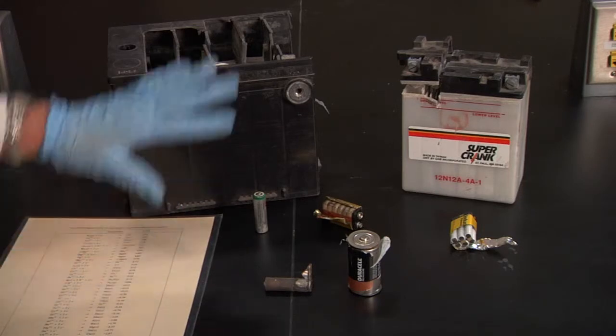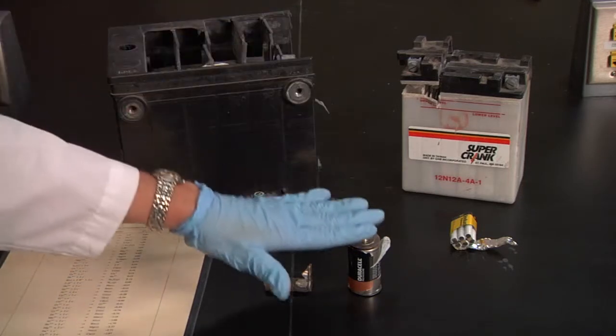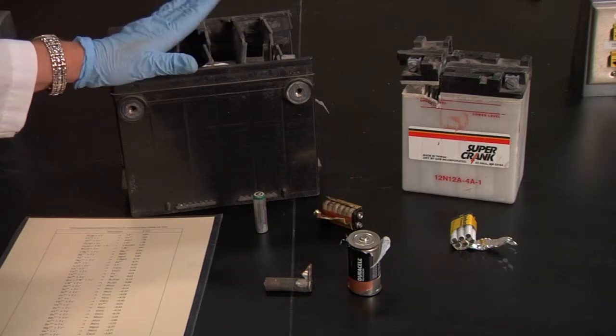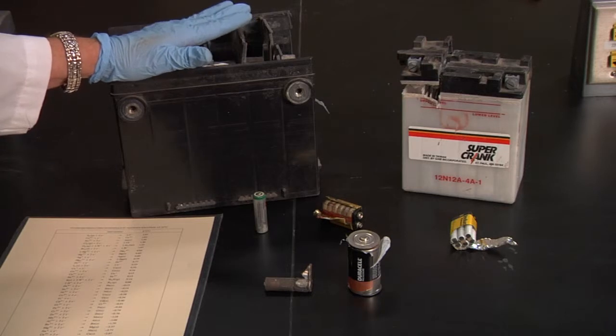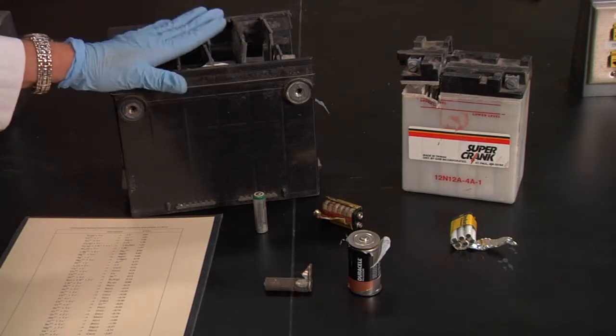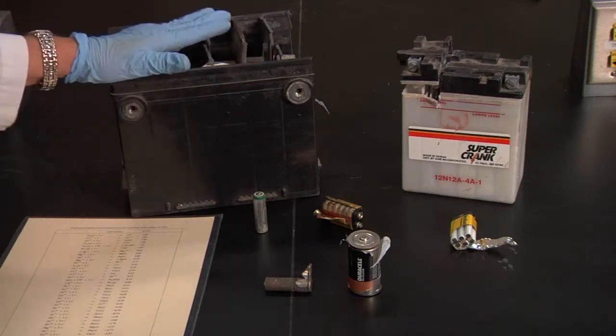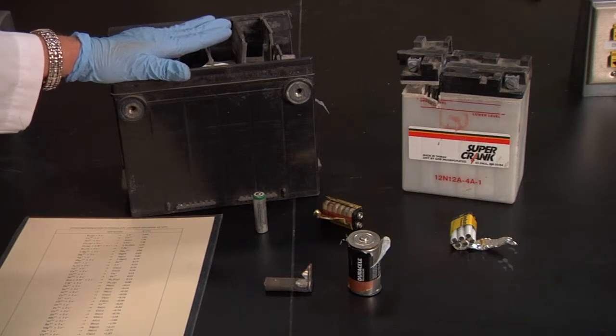So typically we call this a wet battery and these are dry batteries, but in reality they're all wet. You have to have a moist environment for the electrons to flow from one connector to another.